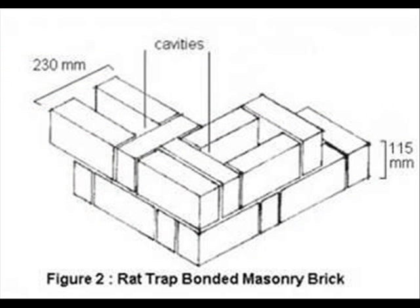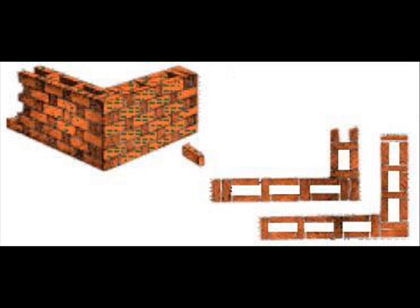Rat trap bond is laid by placing the bricks on their sides having a cavity of 4 inches with alternate courses of stretchers and headers. The headers and stretchers are staggered in subsequent layers to give more strength to the walls.